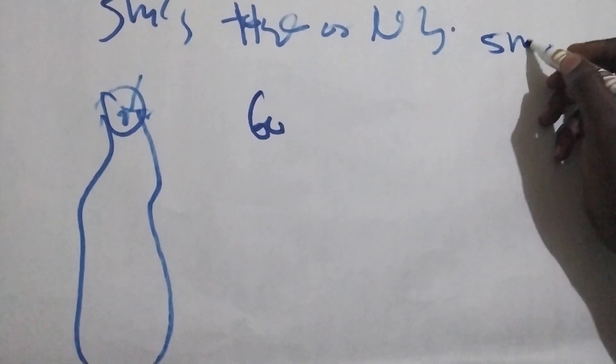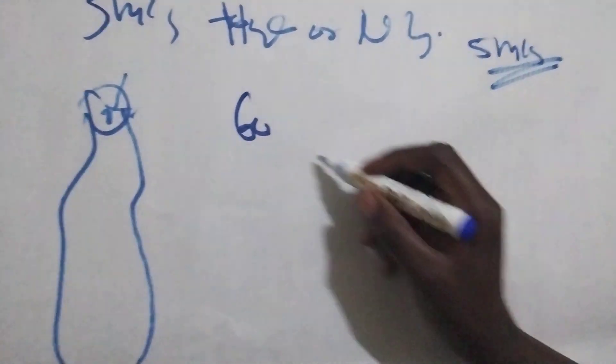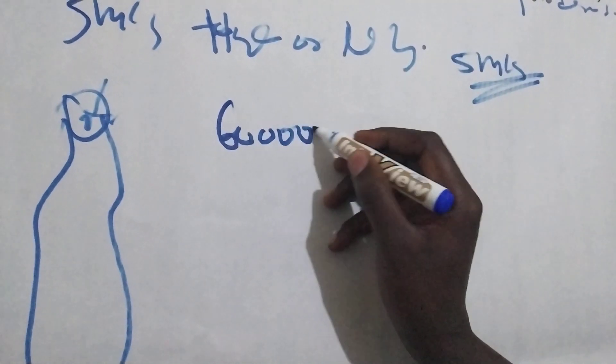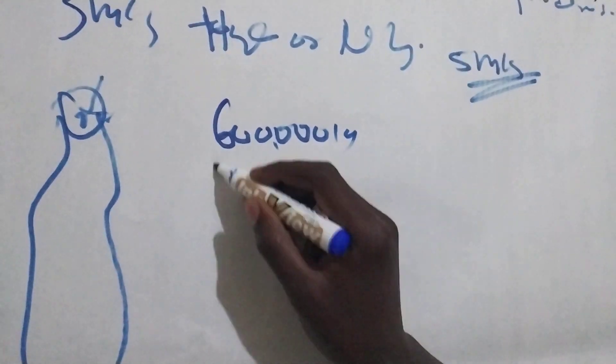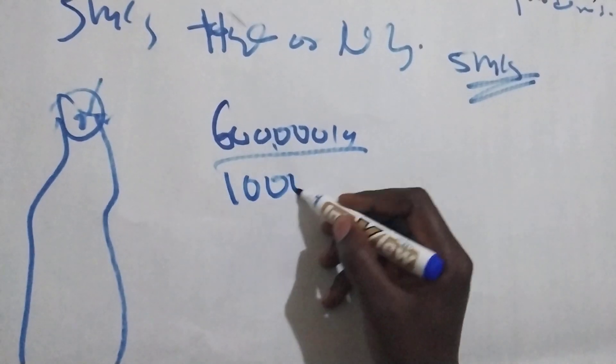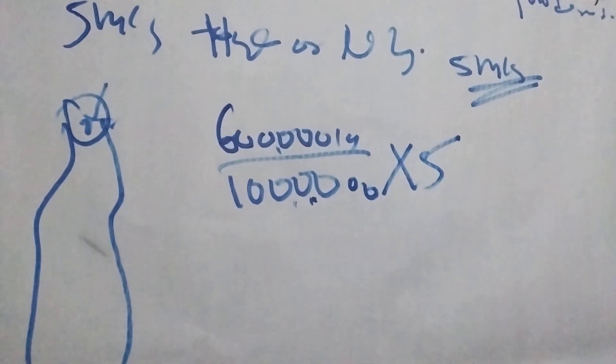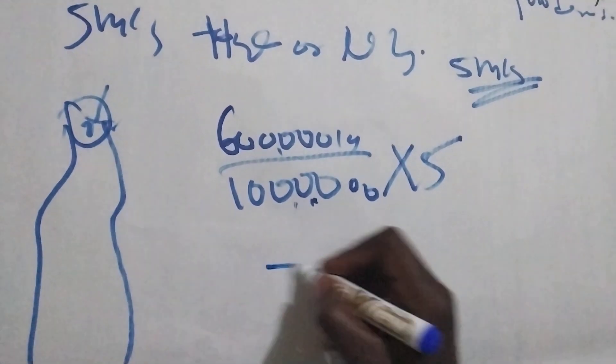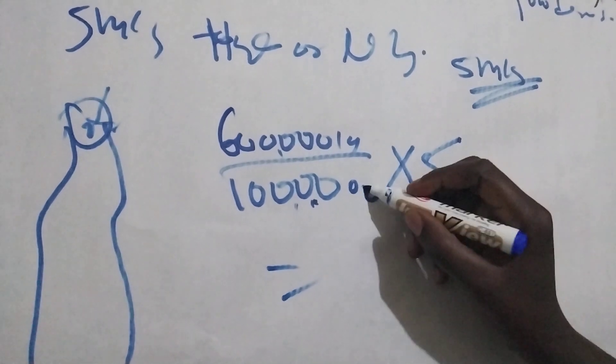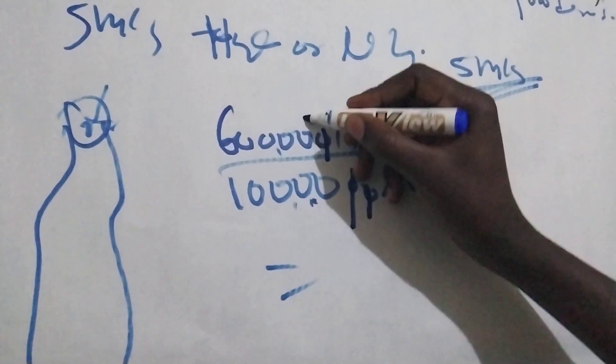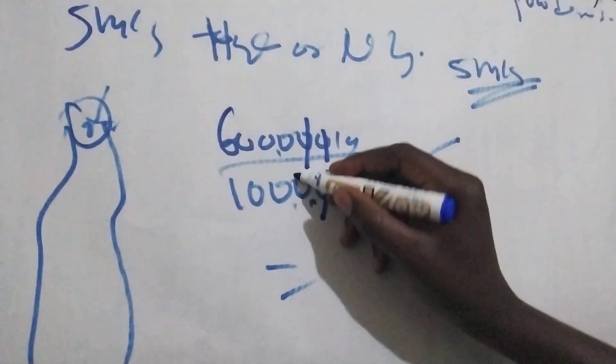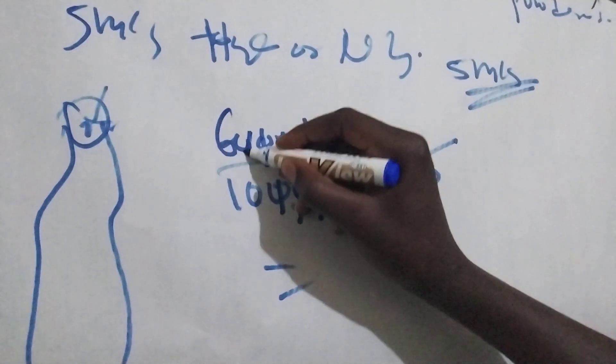Listen, so 600,000 international unit divided by one million times five. Listen, so let's see what we will get.